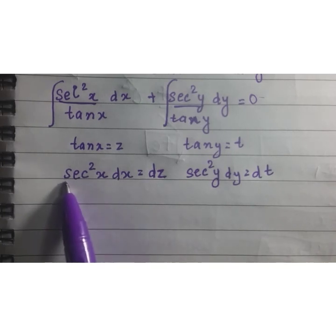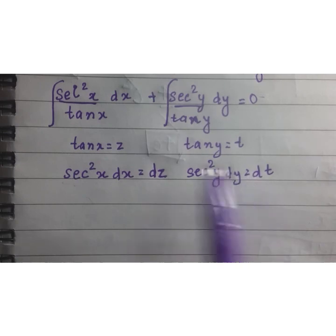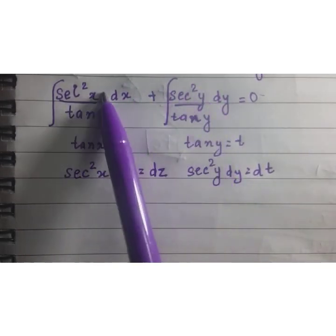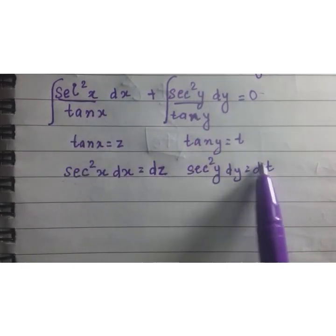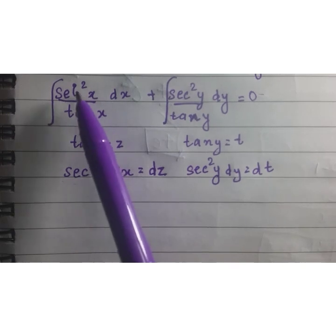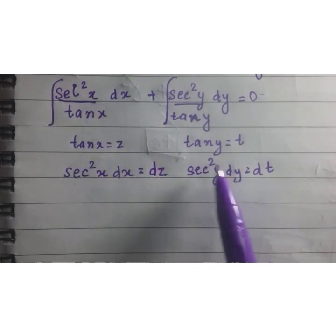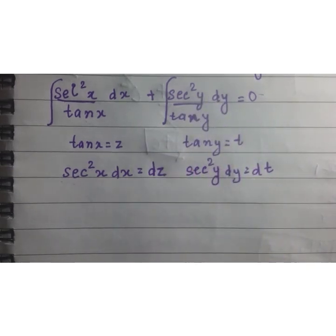We can see this term sec²(x)dx and sec²(y)dy is here in the integrations both in the numerators respectively. This sec²(x)dx will be replaced by dz and this sec²(y)dy will be replaced by dt.